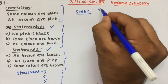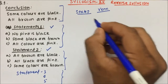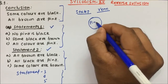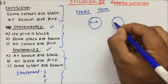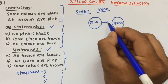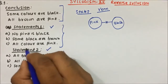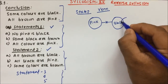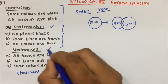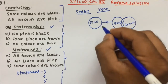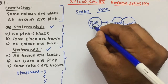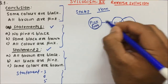No pink is black — so we draw pink here and black here with no relation between them. Some black are brown — so some part of black is brown. And all color are pink — so color will come inside the pink. This is the Venn diagram for statement 1.